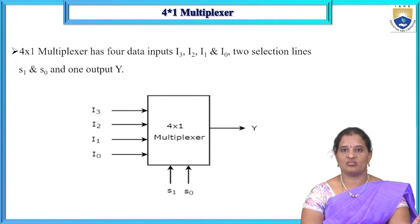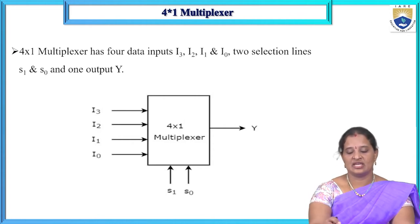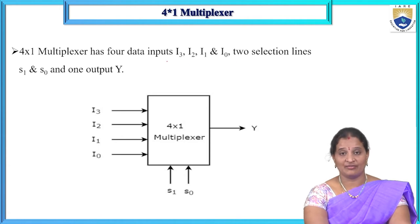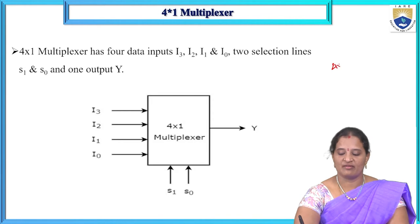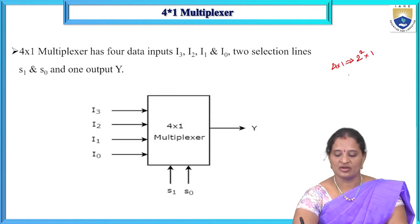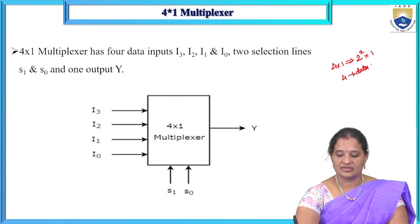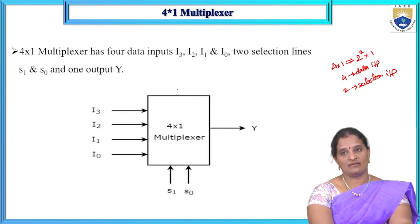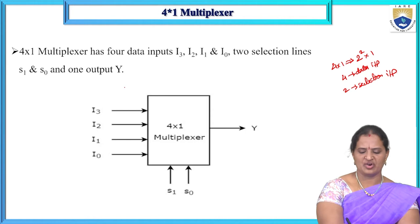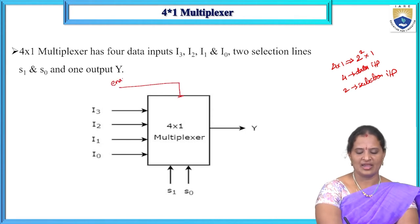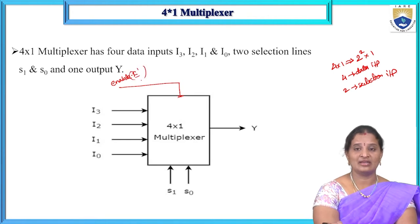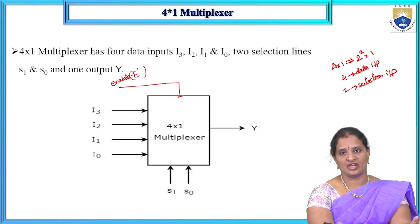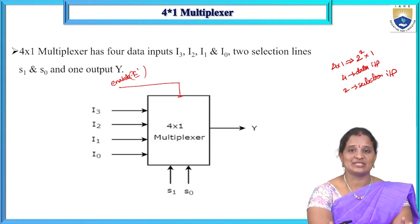The next possible multiplexer size is a 4 by 1 multiplexer. It has 4 data inputs: I0, I1, I2, I3 — that is 2^2 = 4 inputs — 2 selection inputs S0 and S1, and only 1 output. We can also add an enable input, which is optional. For every digital circuit there will be an enable input; if that enable input is high, the circuit is enabled and performs its prescribed operation.